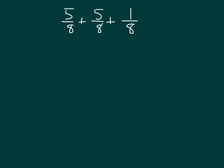What do you notice that's different in this problem? We're looking at eighths, and there are actually three addends. Let's show this using a number line. Notice that 5 and 5 already is going to be 10, which is more than 8, so my number line will have to be bigger than just between 0 and 1. I'll put 0, 1, and 2 so I have more room. I'll divide the number line between each whole number into 8 equal parts.